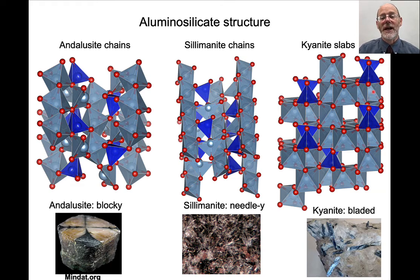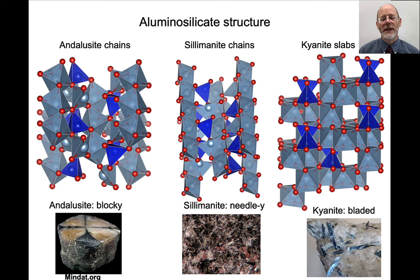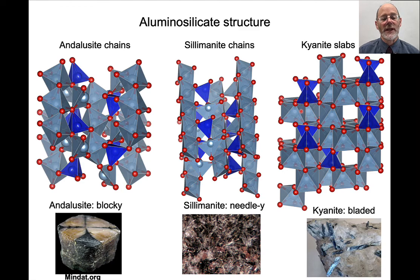Kyanite is totally different — it has a very slabby structure, not the same kind of chain structure. As a consequence, you very rarely see kyanite growing on sillimanite, kyanite growing on andalusite, andalusite growing on kyanite, or sillimanite growing on kyanite. Usually these aluminosilicates are separated in a rock — you might find kyanite in one area, sillimanite in another, but they're not actually touching each other and in close association. Very different from the andalusite-sillimanite relationship.